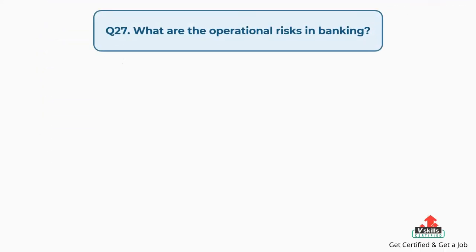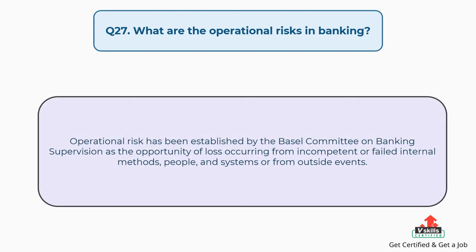Question number twenty-seven: what are the operational risks in banking? Operational risk has been established by the Basel Committee on Banking Supervision as the opportunity of loss occurring from incompetent or failed internal methods, people, and systems or from outside events.